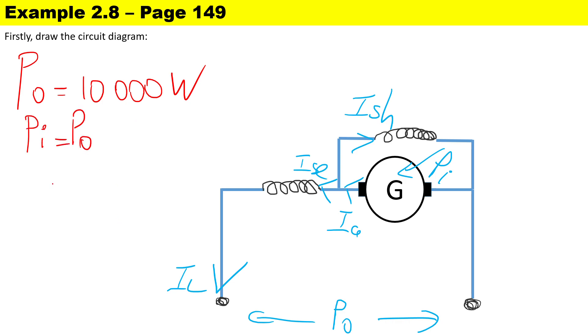We have been given our resistances, so the series resistor Rse is 0.25 ohms, the shunt resistance is 150 ohms, and the shunt resistance is the bigger resistance, and the armature resistance Ra is 0.2 ohms.